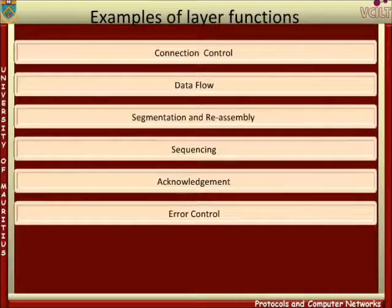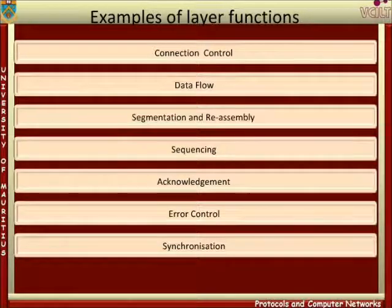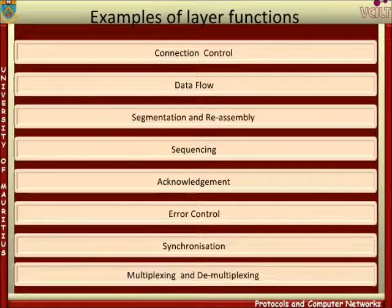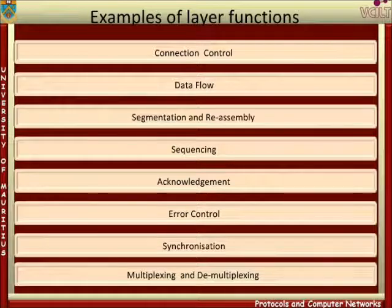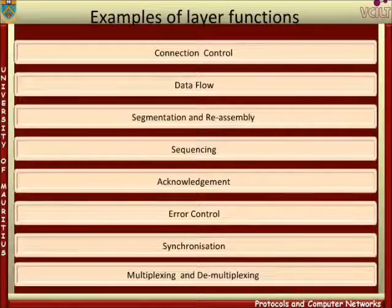Error control: transmission errors do occur in networks, causing bits to be received incorrectly. Synchronization: it may be necessary for two systems to agree on the occurrence of events. For example, two databases may have to agree that a record has been updated on both systems. Multiplexing: an entity may have to establish several connections in order to perform a service, or a connection in a lower layer may need to support several connections in a higher layer for reasons of efficiency. The function of sending protocol data units from several connections over a single connection is called multiplexing. Demultiplexing is the reverse process.